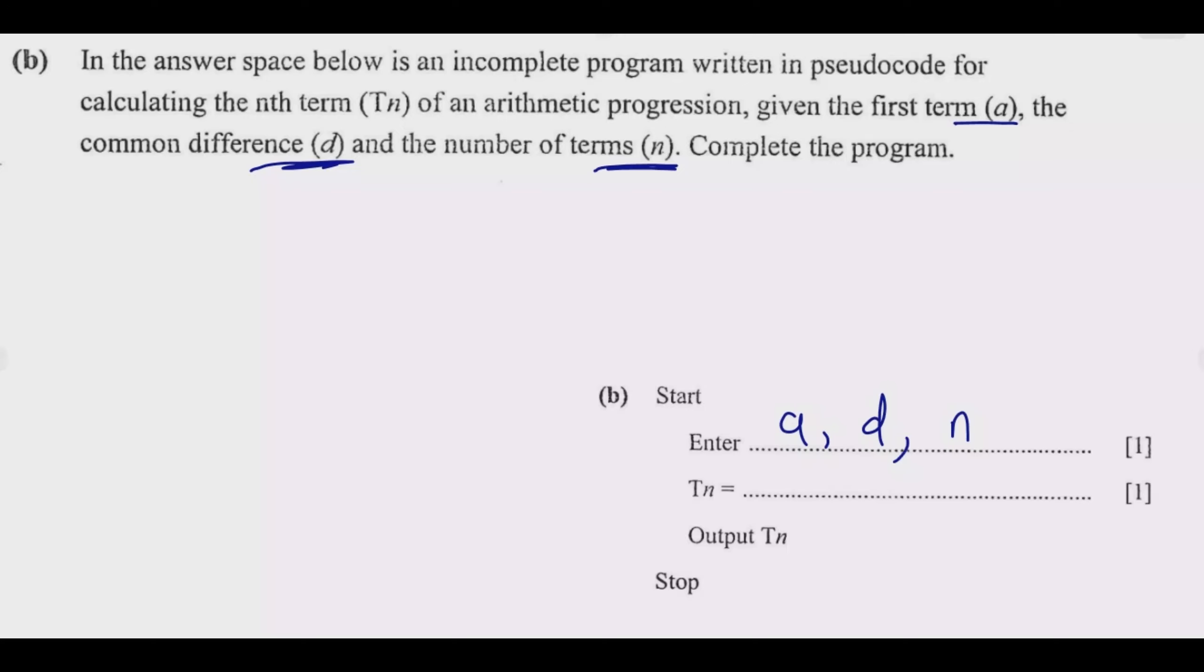We have a plus (n minus one) times the difference. Now here we put a star to distinguish these two, meaning you're multiplying in the computer. That star tells you that we're multiplying. If you forgot to put that star there, you are likely to not get the full one mark, so take note of that star.